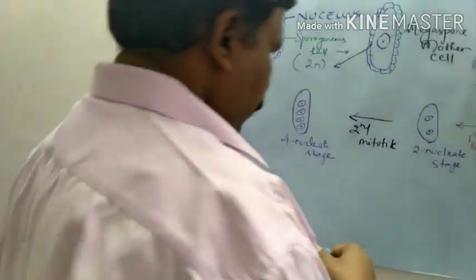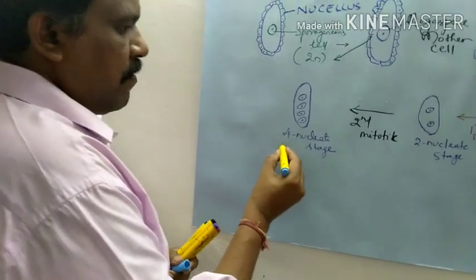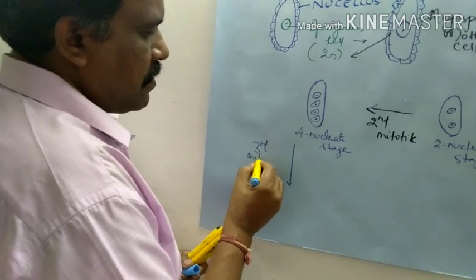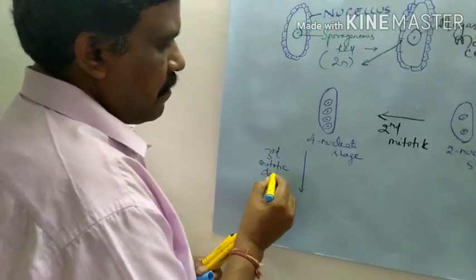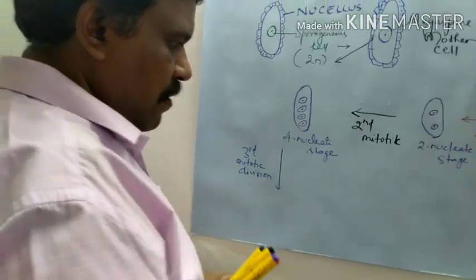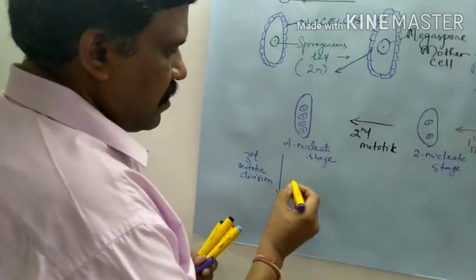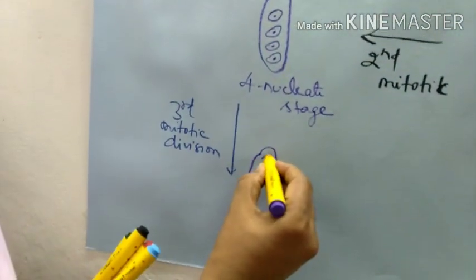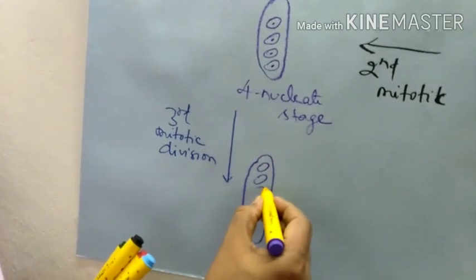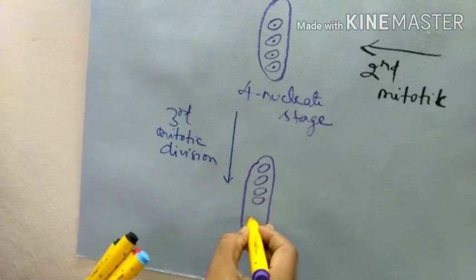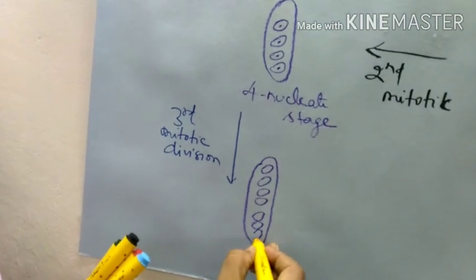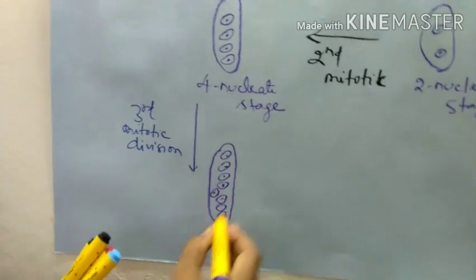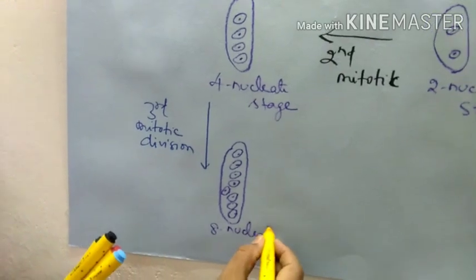This 4-nucleate will further proceed for the third mitotic division. In the third mitotic division you will be having 1, 2, 3, 4, 5, 6, 7, 8 — so how many are there? 8-nucleate stage. This is called the 8-nucleate stage.